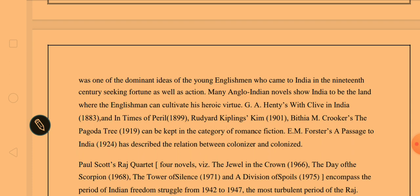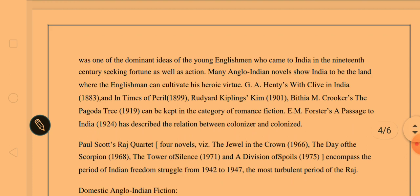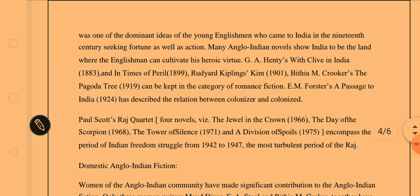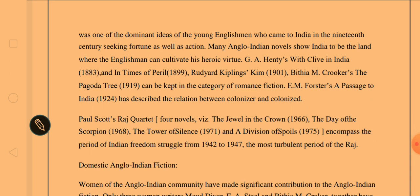Rudyard Kipling is a very famous writer who has written Jungle Book and nursery rhymes like Baa Baa Black Sheep. His novel Kim is a very adventurous and heroic romance written in 1901. B.T.A.M. Kruger's Pagoda Tree in 1919 can be kept in the category of romance fiction. E.M. Forster's A Passage to India, written in 1924, was a kind of travelogue but describes the relationship between the coloniser and colonised — which was not a very good relationship.